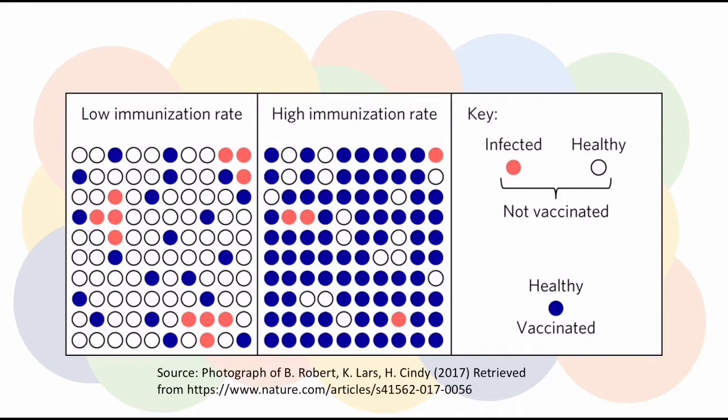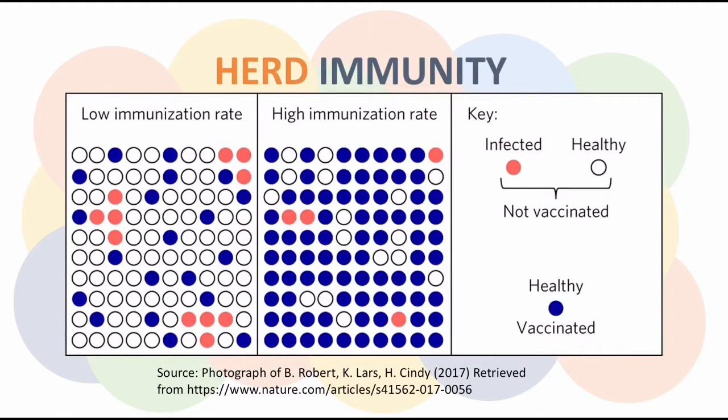A vaccinated individual would not only mean that this person is less likely to be infected, but also he would contribute to a concept called herd immunity. As seen on the diagram, this would be achieved when there is a sufficiently high number of vaccinated people that unvaccinated people would be shielded from those who are already infected, further lessening the likelihood of infection within the community.